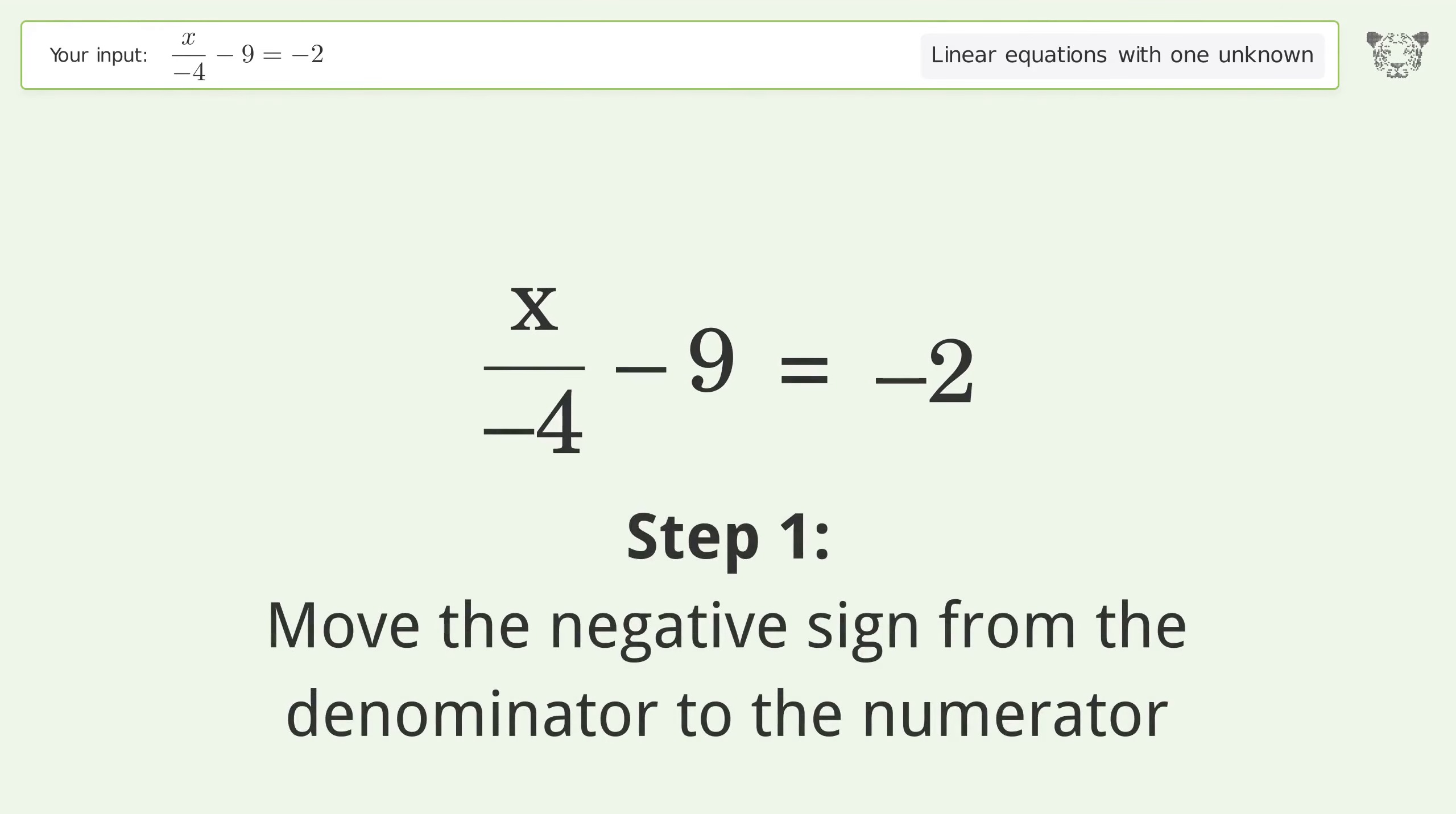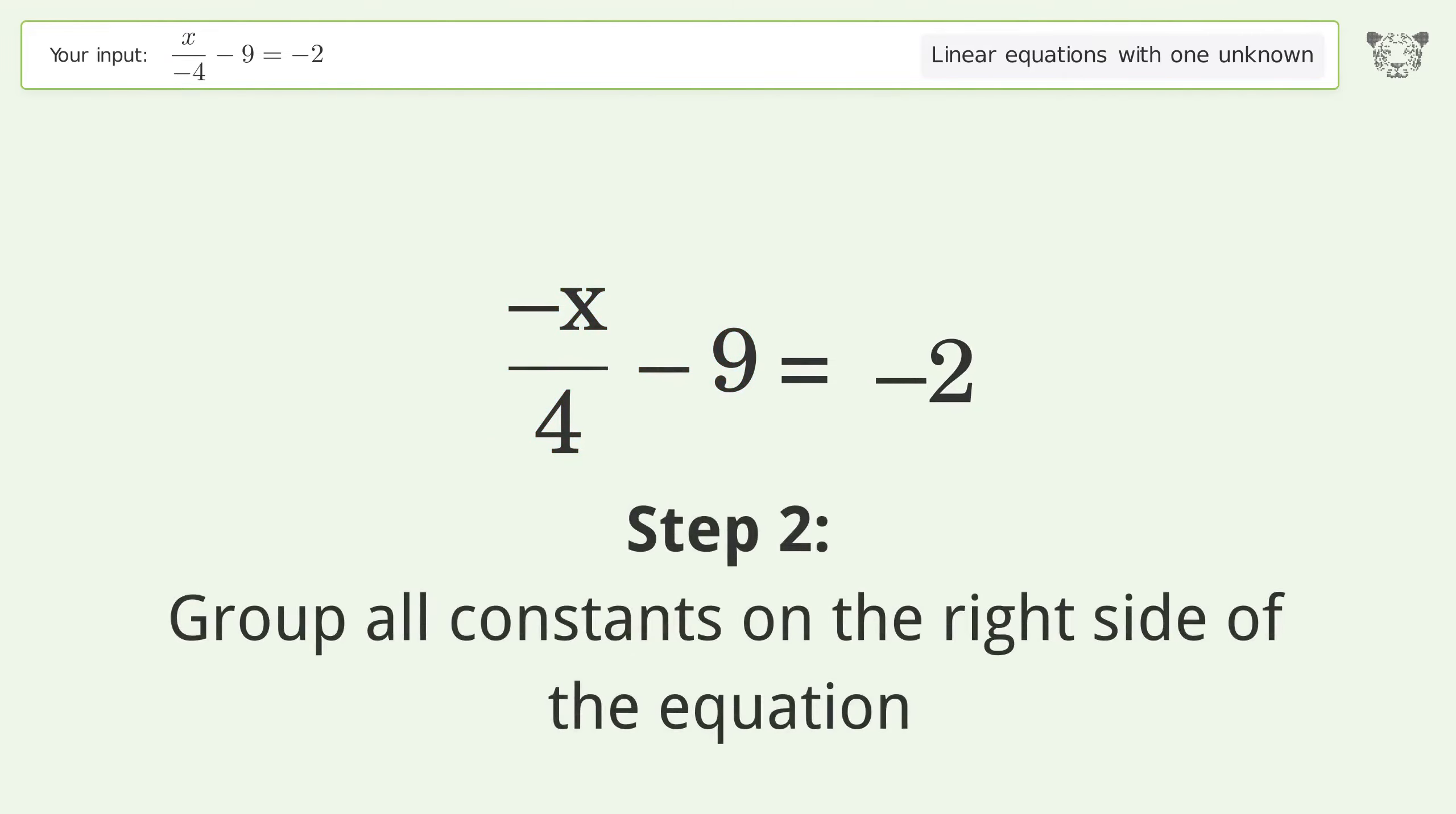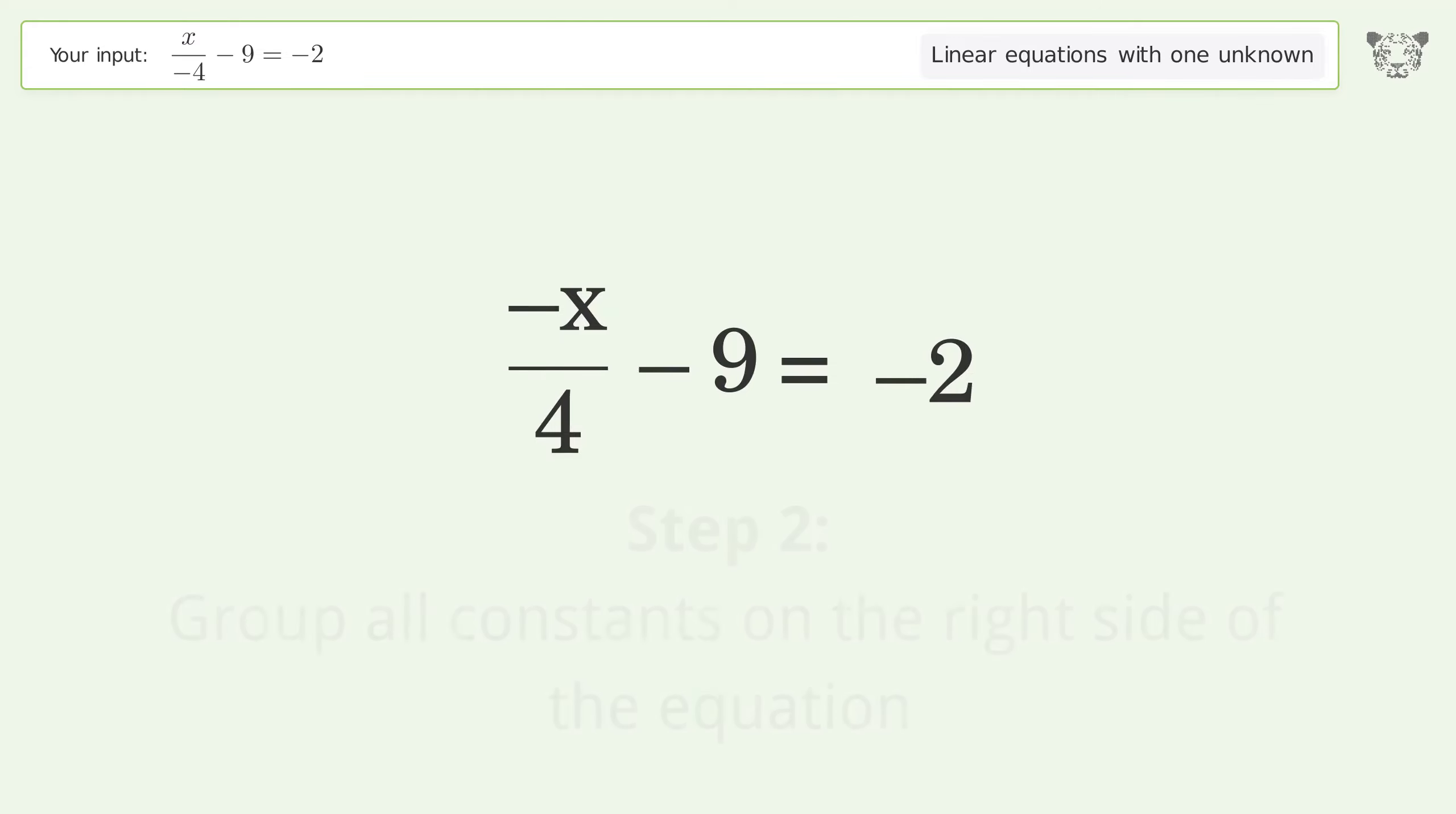Move the negative sign from the denominator to the numerator. Group all constants on the right side of the equation. Add 9 to both sides. Simplify the arithmetic.